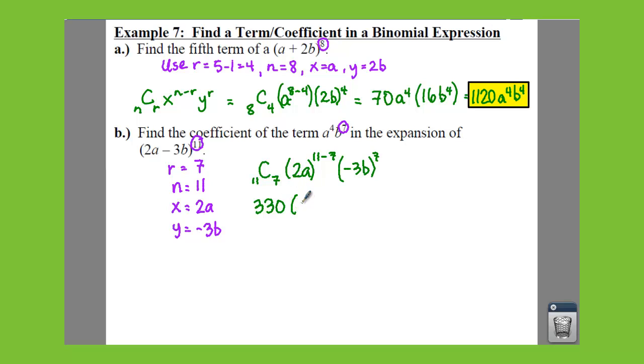So we have 2a to the 4th power, which gives us 16a to the 4th. And then negative 3 to the 7th, well, that's a large number. That's negative 2,187b to the 7th.